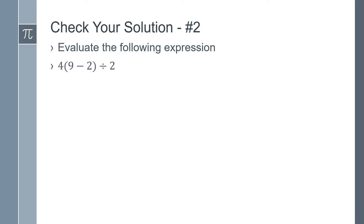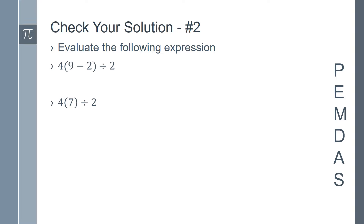First things first, let's write PEMDAS on the side of the page. This time we do have a set of parentheses, so we need to start in there. 9 minus 2 is 7, so now the expression is 4 times 7 divided by 2. No exponents, so we move on to multiplication and division. Remember to work from left to right. 4 times 7 is 28. Now we have 28 divided by 2, which is 14.